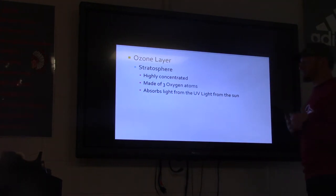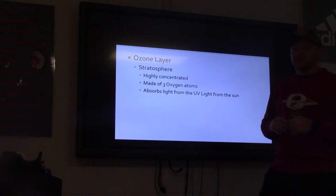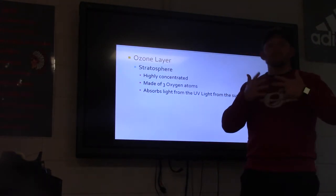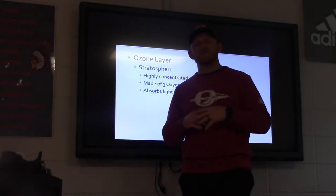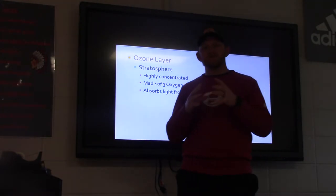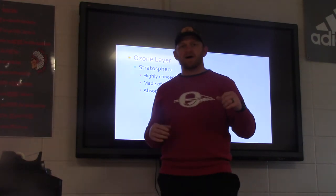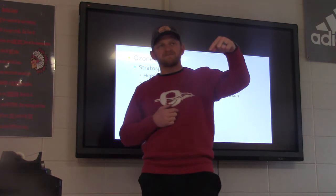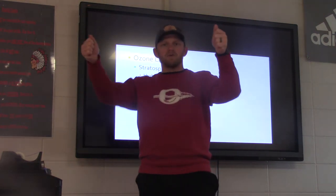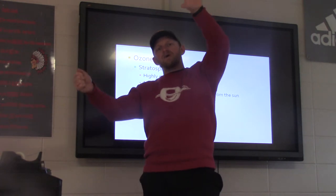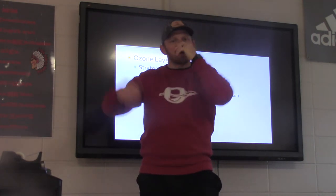It absorbs UV light from the sun. When it gets too hot, it separates. We heat up molecules and they spread apart. So when the sun heats up these oxygen molecules, it breaks them apart. If oxygen we breathe is O2, the sun comes in and hits it, it becomes O1 and O1. Now I've got another O2 floating around, and that O2 binds to the O1, which makes O3.